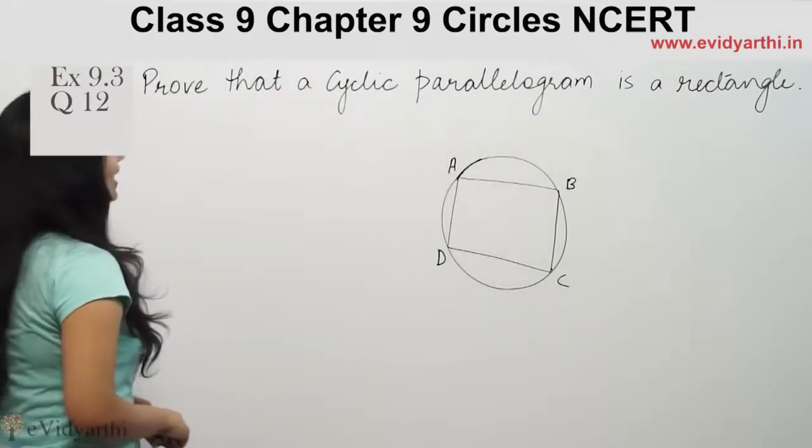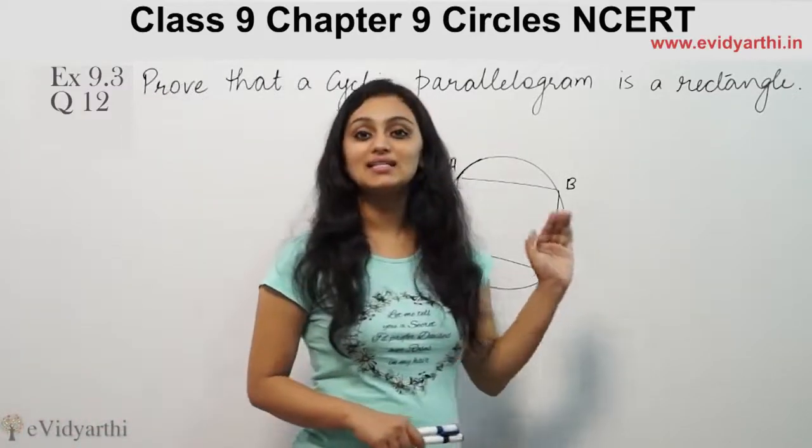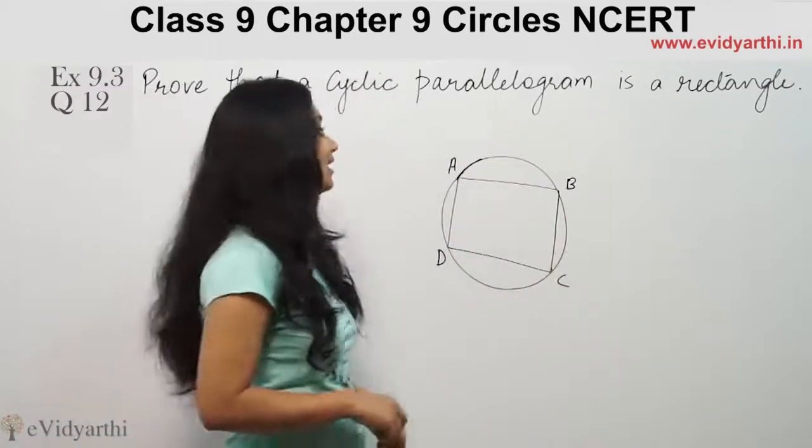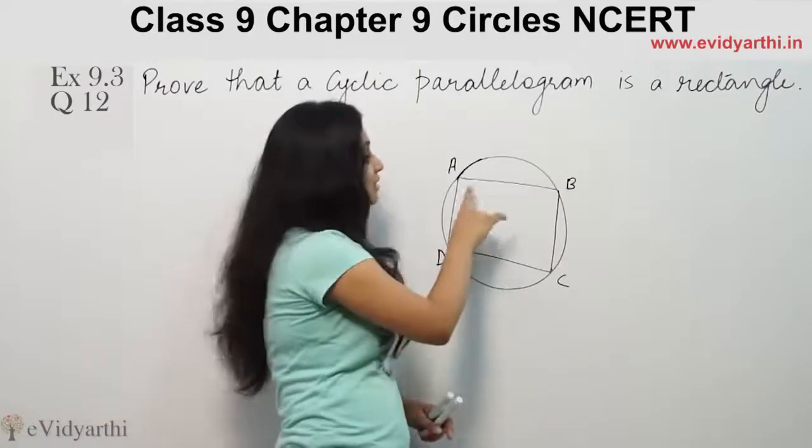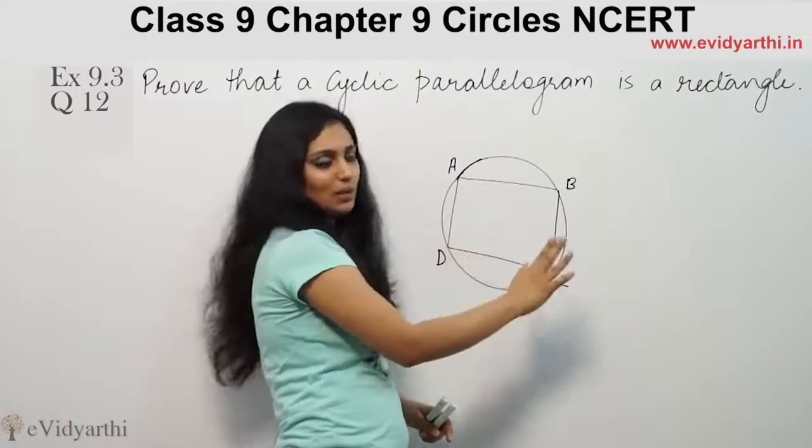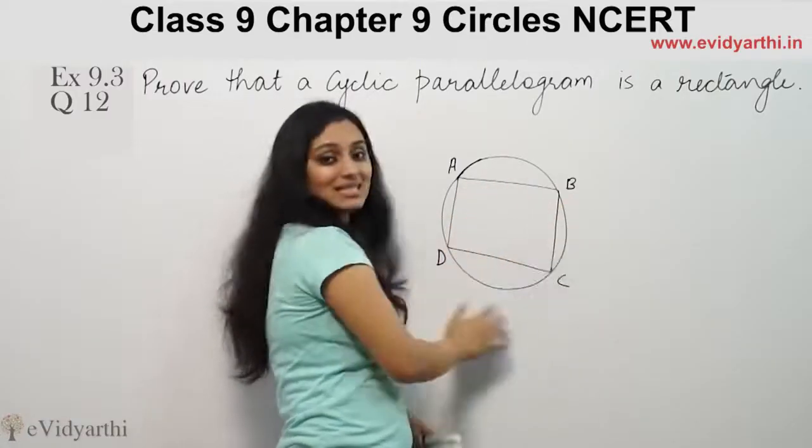This says, prove that a cyclic parallelogram is a rectangle. The figure is not given to you. You have to make a circle and then make a parallelogram inside it. Label it as A, B, C, D.